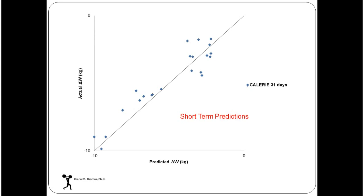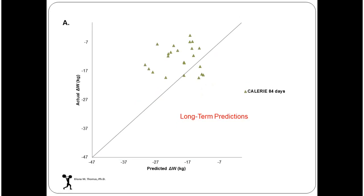Testing this: the actual change in weight versus the predicted change by the 3500 rule, using the famous calorie study from Pennington Biomedical Research Center. At one month, it's not terrible — there's some scatter but it's not awful. For short term, it's doing okay. Long term at 84 days, however, you see that the predicted change in weight is much higher than the actual change. The 3500 calorie rule is not doing a good job a little further down the line — the assumptions are no longer being held to. There's now friction.